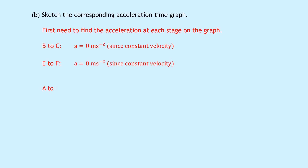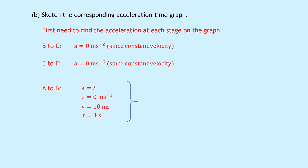For A to B: a equals question mark, u equals 0 metres per second, final velocity is 10 metres per second, and time is 4 seconds. Writing down a equals v minus u over t and substituting: 10 minus 0 over 4, which gives an answer of 2.5 metres per second squared. For C to D: u equals 10 metres per second, v equals 0 metres per second, time is 4 seconds. That gives 0 minus 10 over 4, which is minus 2.5 metres per second squared.